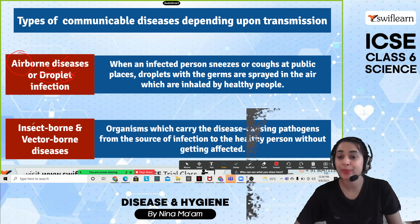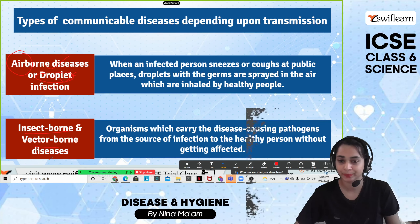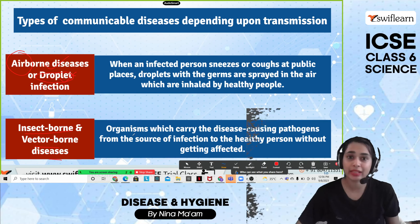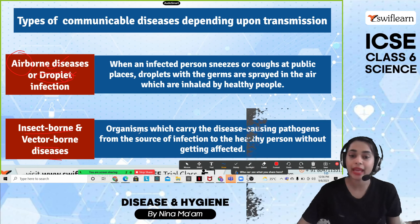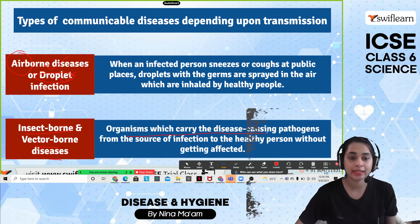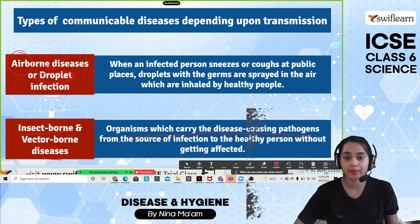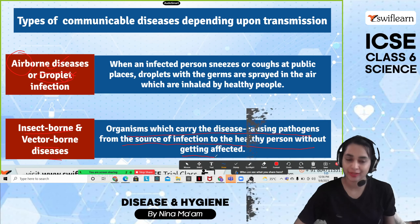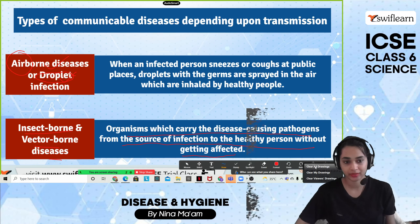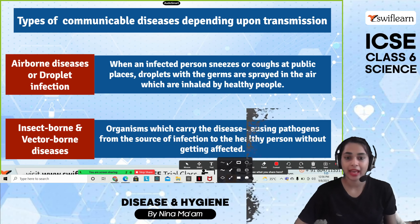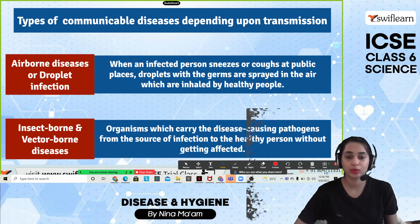The next category is insect-borne or vector-borne diseases, which are carried and caused by organisms. These organisms carry disease-causing pathogens from the source of infection to the healthy person without getting affected themselves. Examples include malaria and typhoid.